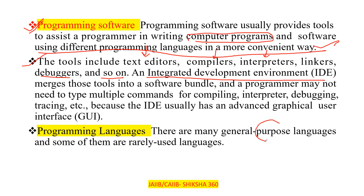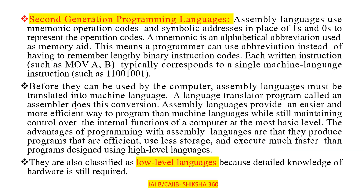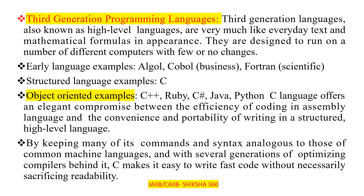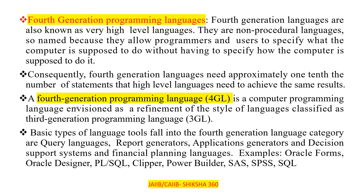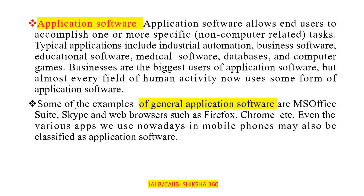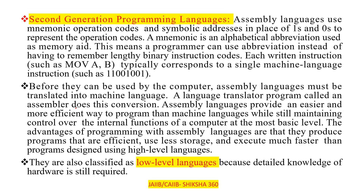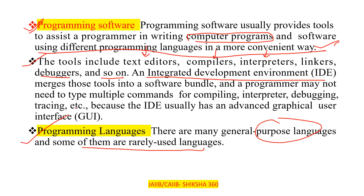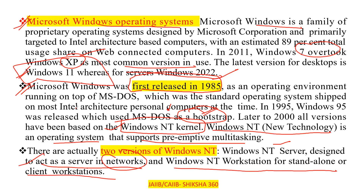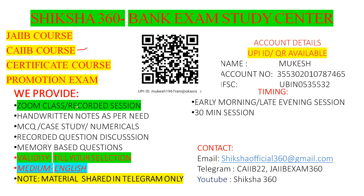There are many general-purpose programming languages, some of which are rarely used. In the next session, we will cover the different generations of computer programming languages: first, second, third generation (including C, C++, Ruby, Java, Python, COBOL), fourth generation, and fifth generation, along with application software and important exam questions. In this session, we covered the basic introduction. Thanks to all of you for joining this discussion.